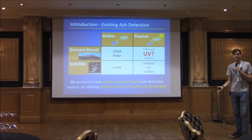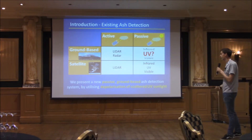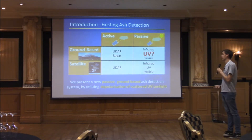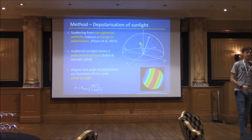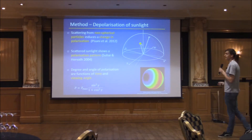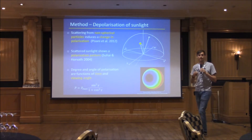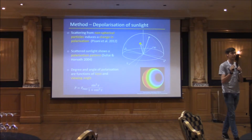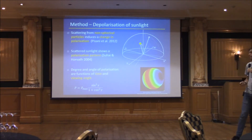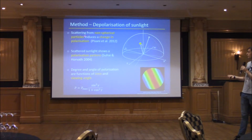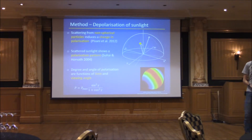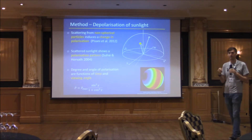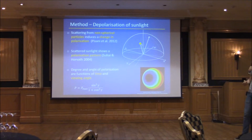So I'd like to present a new system to passively measure ash from the ground using depolarization of scattered sunlight. Why depolarization? Ash is a very non-spherical particle, formed by fragmentation of the magma as it rises through the conduit, meaning the particles are very jagged and not spherical. Non-spherical particles induce a change in polarization on scattered light, which means we can differentiate them from other aerosols such as sulphate or water droplets that come out of volcanoes, which are typically spherical.